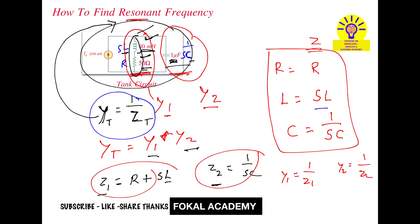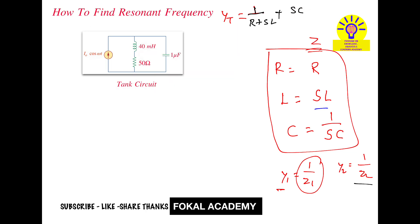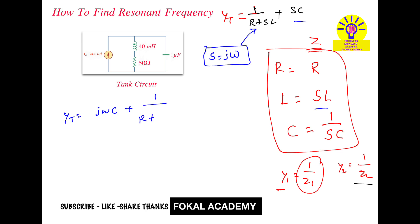The overall admittance is Yt = Y1 + Y2 = 1/(R + SL) + 1/(1/SC). Since 1 divided by 1/SC equals SC, we get Yt = 1/(R + SL) + SC. Now, substituting S = jω (converting from Laplace to frequency domain), we get Yt = jωC + 1/(R + jωL).